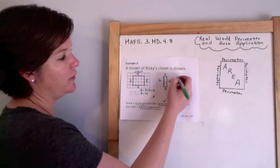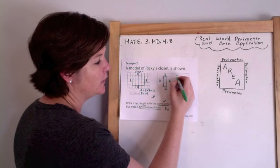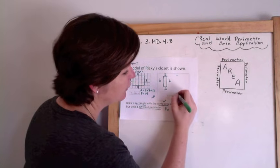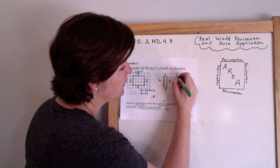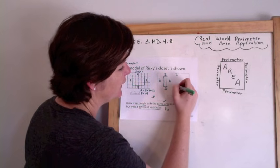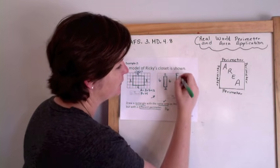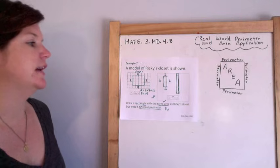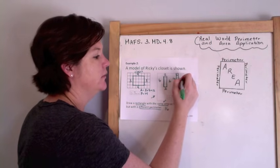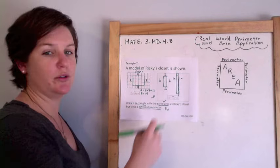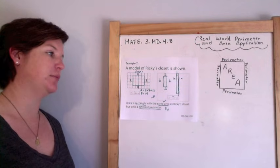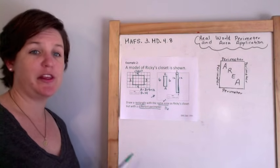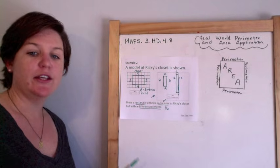You could also draw a 1 by 12 rectangle — counting out all 12 units. That would also be a different perimeter: 12 plus 12 is 24, plus 2 is 26 — a different perimeter too. You could also take these rectangles and flip them so they are 2 by 6 or 1 by 12. You get the point.